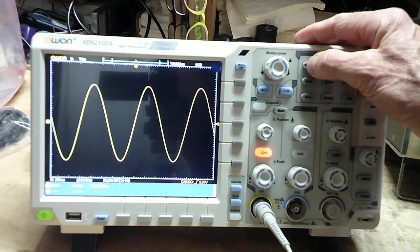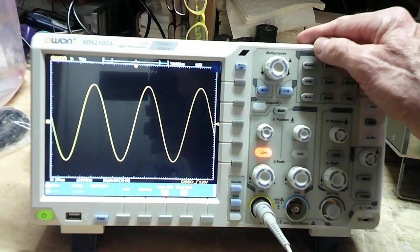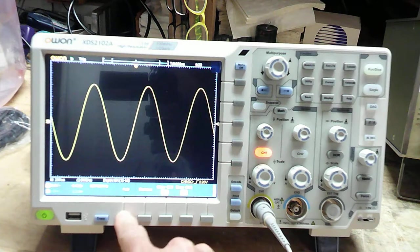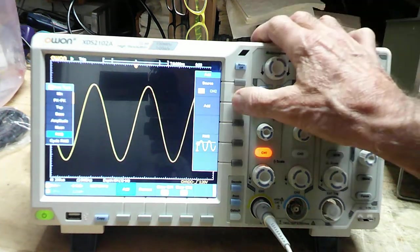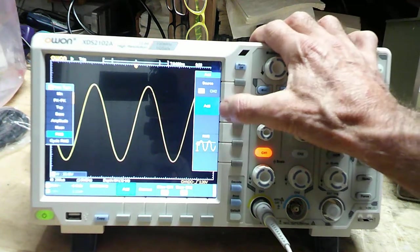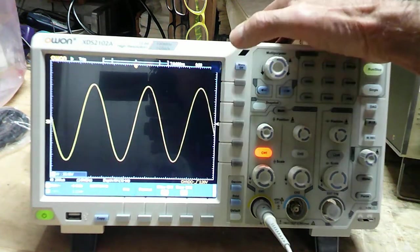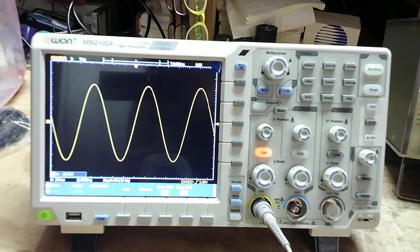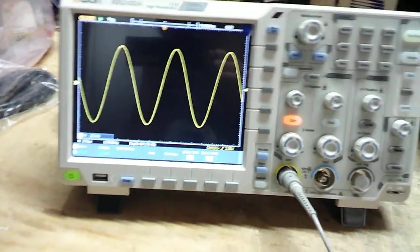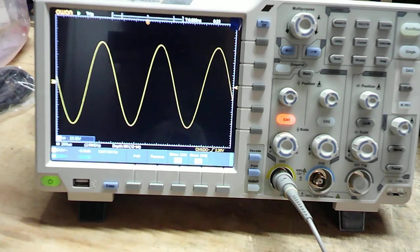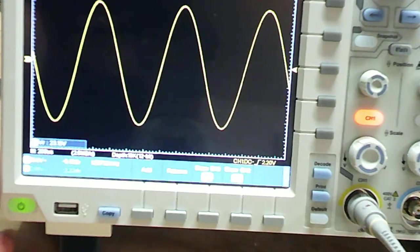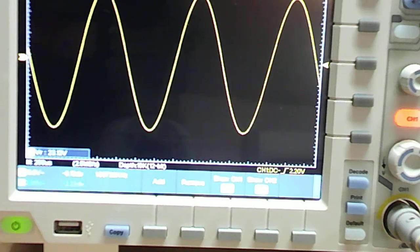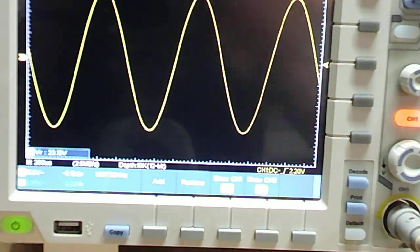Now, what we can do on this scope is we can select measure and add RMS volts. And we hit add there. Turn the menus off. And I'm going to zoom in a little bit right there in the lower corner of the screen. Hopefully you can see this. We're reading 23.1 volts RMS.